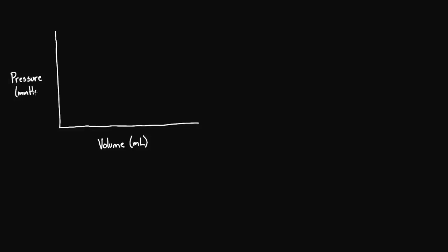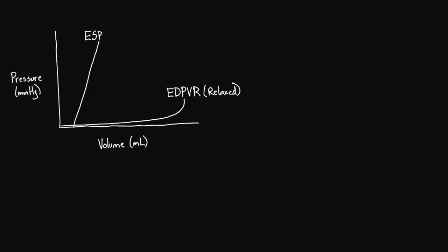So we have volume and pressure on this graph. I'm going to start by sketching out very quickly a pressure-volume loop. To do that well, you always have to start with two lines: the end-diastolic pressure-volume relationship, which basically tells you how pressure and volume relate to each other when the heart is completely relaxed — this is the line that would form if we filled up a relaxed left ventricle. And then we have another line called the end-systolic pressure-volume relationship, which is when the heart is completely contracted.